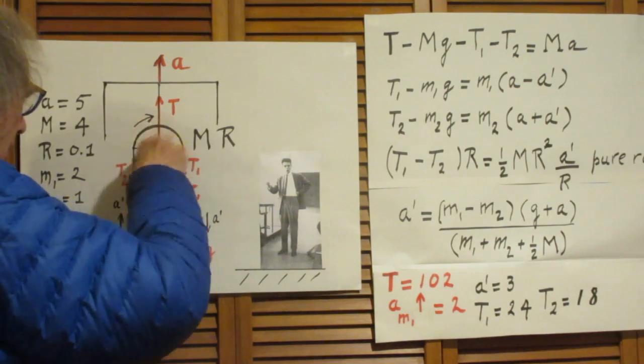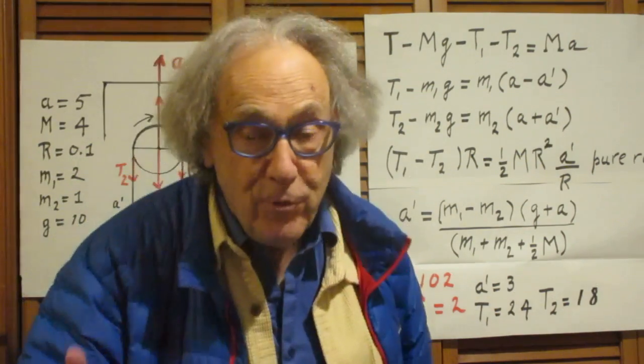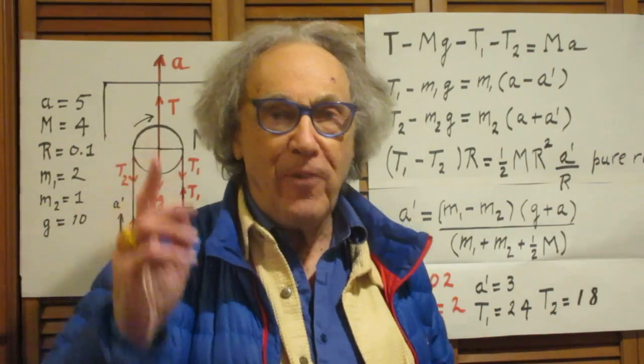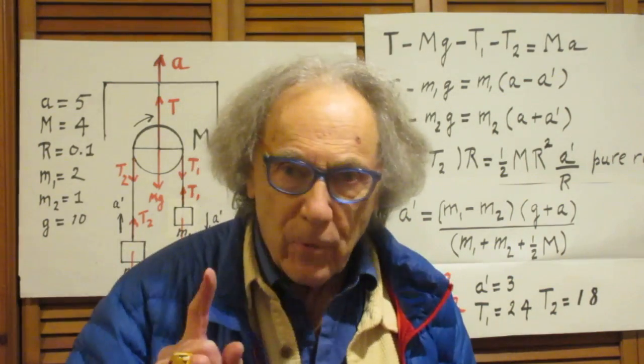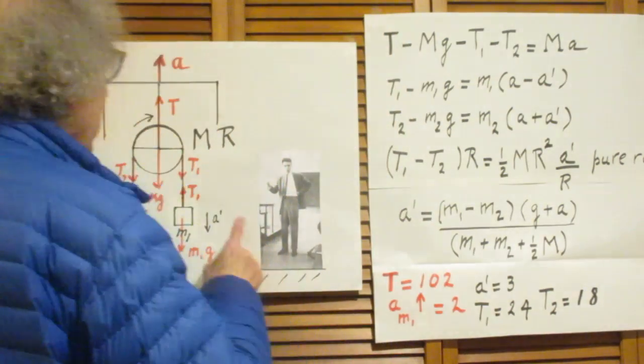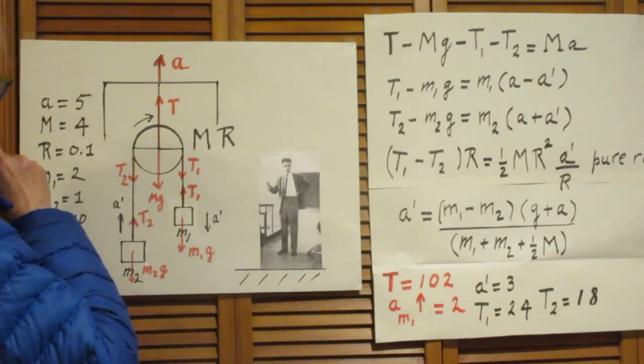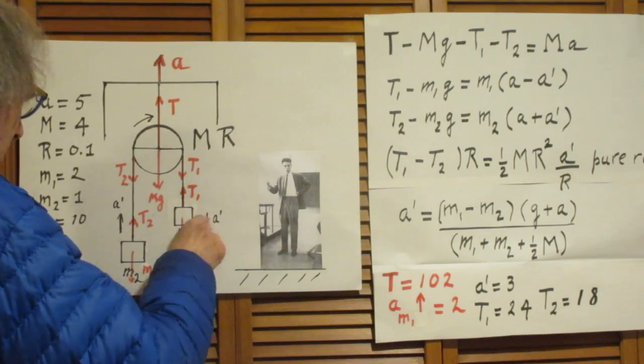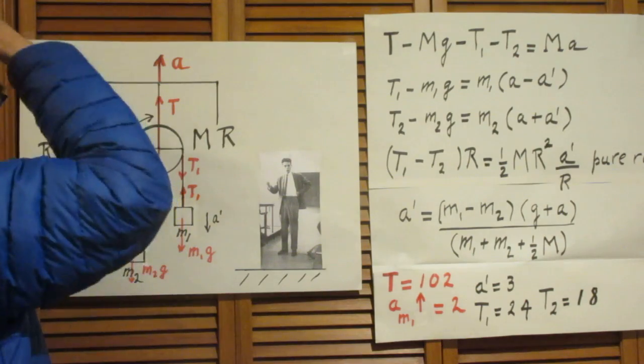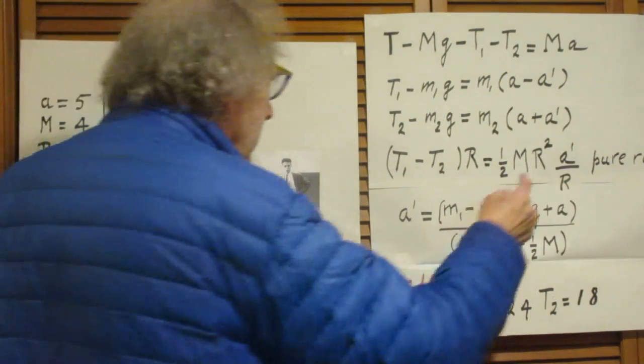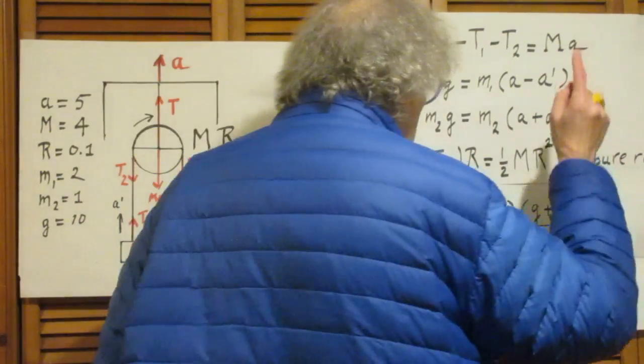So T1 minus T2 times capital R is the clockwise torque of this system. That is the moment of inertia of this disk, which is one half MR squared times alpha. Alpha is d omega dt, the angular acceleration. And if you revisit our yo-yo problems, you will remember that if there is no slip, this alpha is the same as the acceleration in this rope divided by R.